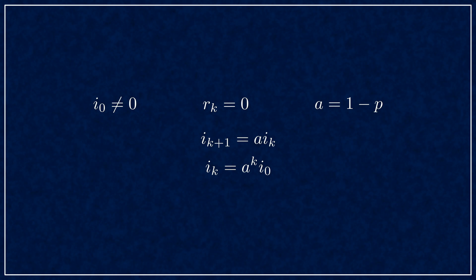You can see that the current at any time k will be equal to the initial current times the parameter a to the power of k. What we need is that this expression should not blow up to infinity and that means the absolute value of the parameter a needs to be less than 1.